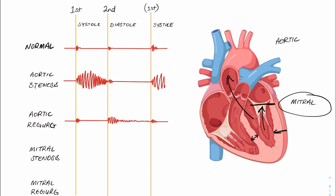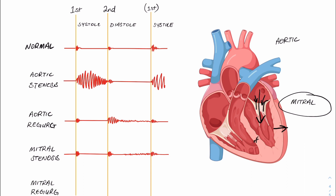Moving on to mitral stenosis. During systole, the pressure differential snaps the mitral valve shut as normal and allows blood through the aortic valve as normal. However, during diastole, when blood is flowing from the atria to the ventricles through a narrowed mitral valve, that's when we would hear an abnormal heart sound. Filling of the ventricles is largely a passive process, so we still hear the normal shutting of the aortic valve. It's towards the end of diastole, when the atria contract to eject that extra volume into the ventricles, that we hear the abnormal sound as blood is pushed through the stenotic mitral valve.